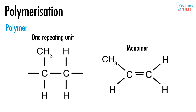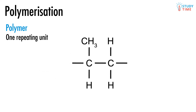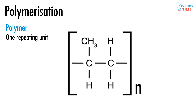Polymerization is really just a series of addition reactions, one after the other, to create a long chain molecule. When we draw a single repeating unit, we draw it in square brackets and denote it with the letter N after. This represents the fact that there can be a varying number of repeating units in the polymer chain, represented by the variable N.